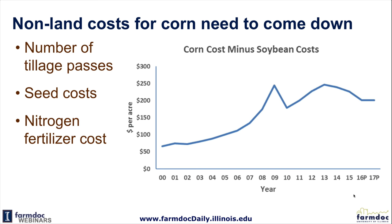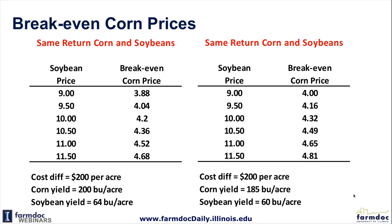We need to see those numbers come down if we want corn and soybeans to have roughly the same profitability. Things that would need to come down are number of tillage passes, seed cost — we need sizable seed cost declines — and nitrogen fertilizer prices. Those are the big three differences between corn and soybeans. At a $9 soybean price, corn prices have to be above $3.88 for corn to be more profitable than soybeans given a $200 cost difference. At $9.50 soybeans, the break-even is $4.04; at $10, it's $4.20. The 2017 projection of $9 soybeans and $3.50 corn means corn will still be less profitable.